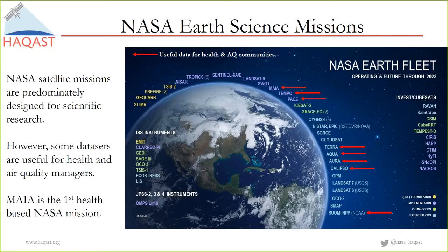There are a couple of upcoming satellites of note: TEMPO and Maya. TEMPO measures NO2 and SO2, but it will do it 24 hours a day — during daylight hours you'll get hourly information on those pollutants. Currently with the existing satellite suite, we only get one piece of information a day as the satellite passes overhead. Maya will be launched soon, and it is the first health-based NASA mission. NASA scientists and engineers are working with health professionals around the world to design the satellite so that the data are very useful to the health community.